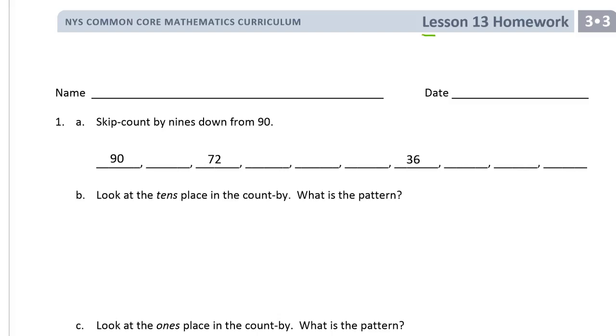Welcome to the homework for lesson 13. This is module 3 of grade 3. Please write your name first. And we're skip counting backwards by nines, down from 90. If you know your nines really well, it'll go really fast. Otherwise, I suggest repeated addition, starting with 9 down here.